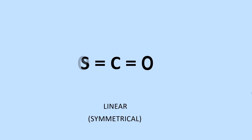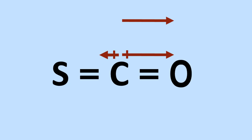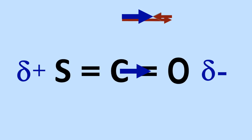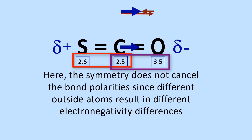Now let's make the outside atoms different — how will that affect polarity? Here we see the electronegativity differences in the bonds, and thus the bond polarities are different. What will be the result of adding them together? That's right, they add up to a non-zero vector. SCO is a polar molecule with the oxygen side being more negative and the sulfur side being more positive. The symmetry in this case does not cancel the bond polarities since different outside atoms result in different electronegativity differences.